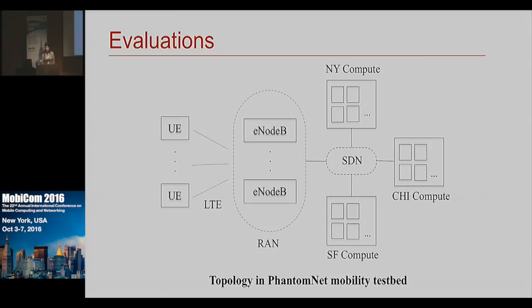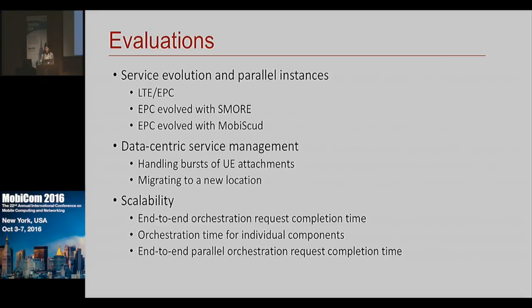This is what the topology looks like in the PhantomNet mobility testbed for the evaluations. We have compute nodes in New York, Chicago, and San Francisco. We implemented and evaluated Proteus by creating templates for three different services and multiple evaluations. I'll quickly talk about one: the data-centric service management and migrating to a new location.